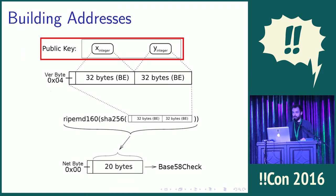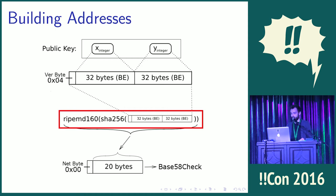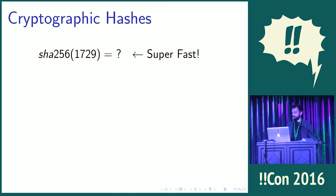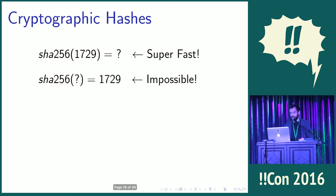Now we know where the public key comes from and why it has x and y coordinates. The remaining step in the middle is RIPEMD-160 and SHA-256 — these are cryptographic hashes. The property that cryptographic hashes have is that one direction is super fast and the other direction is so slow as to be effectively impossible. If you know an input you can send it through no problem, but if you only have the output you are never ever going to get the input back.